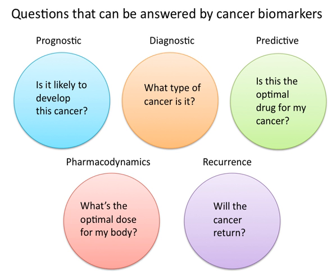Other examples of cancer biomarker types include tumor suppressors lost in cancer (e.g., BRCA1, BRCA2), RNA biomarkers (e.g., mRNA, microRNA), proteins found in body fluids or tissue (e.g., prostate-specific antigen and CA-125), and antibodies to cancer antigens.